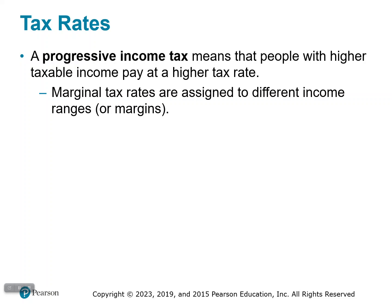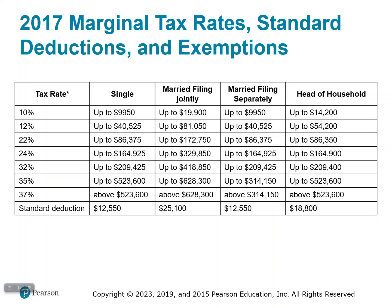A progressive income tax means that people with higher taxable income pay at a higher tax rate. Marginal tax rates are assigned to different income ranges — for example, $5,000 to $9,999, then $10,000 to $14,999, and so on. If you make anywhere in a given range, you'll pay that percentage on that portion of your income. You find these tax rates in the rate tables.